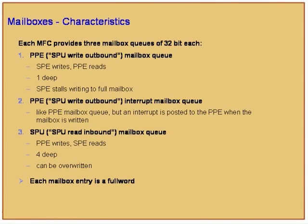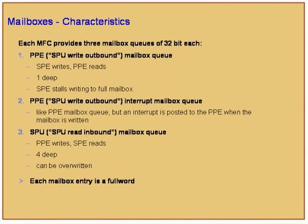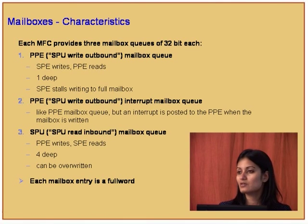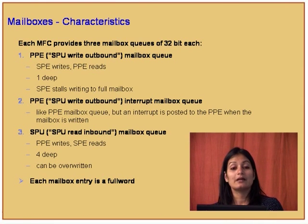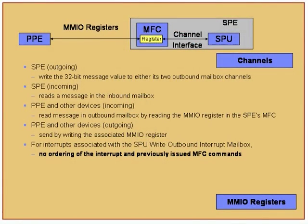The PPE mailbox queue is one deep. There is an SPE write outbound mailbox queue for messages the SPE wants to write out to the PPE. There's also a write outbound interrupt mailbox queue — the same, except that after data is written it generates an interrupt. Then there's the SPU read inbound mailbox queue — the PPE writes to it and the SPE can read. The inbound mailbox is four deep, holding four 32-bit messages (16 bytes wide). Even for mailbox, the PPE has to interact via MMIO registers.